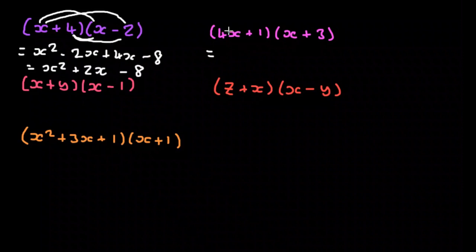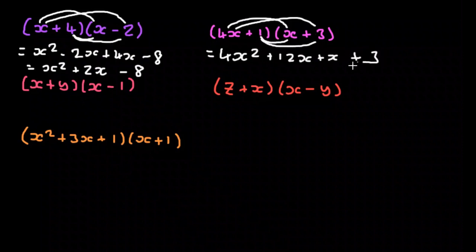Here we apply the same technique, so we do 4x multiplied by x, so that's 4x squared. Then we do 4x multiplied by 3, that's plus 12x. Then we do 1 times x, plus x, and 1 times 3, that's plus 3. So altogether that's 4x squared plus 13x plus 3.